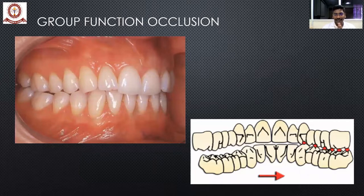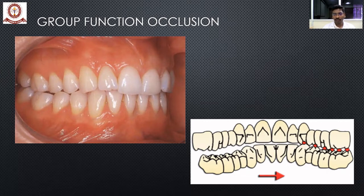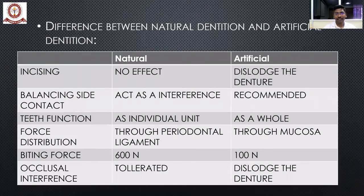The next concept is group function occlusion. When the patient performs the same lateral movement — clenching the teeth and moving the mandible to the right side — contact occurs starting from the canine, premolar, and mesiobuccal cusp of the first molar region. When the entire teeth on the working side come into contact simultaneously, that is called group function occlusion. This is seen in about 20 to 30 percent of the natural dentition population.